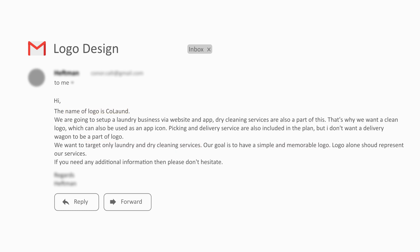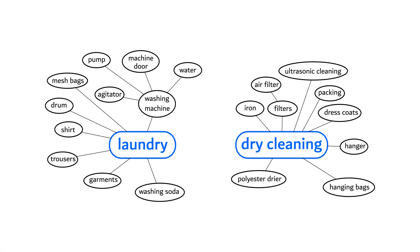Let's continue with the mind mapping process. This is the simple map that I used before designing the logo. I broke down the laundry and dry cleaning services into different elements — each of these elements can be used as part of the logo, but we will use the most appropriate ones.